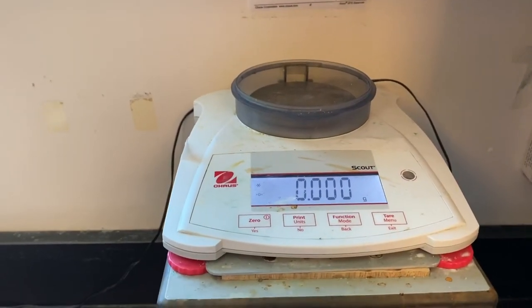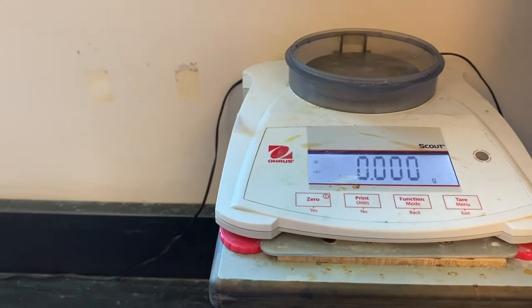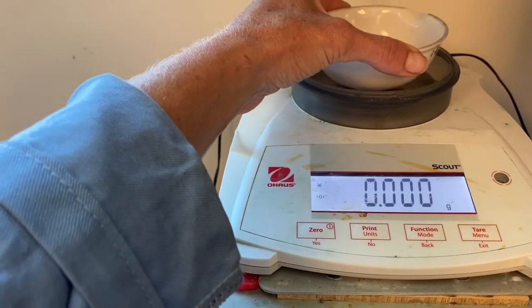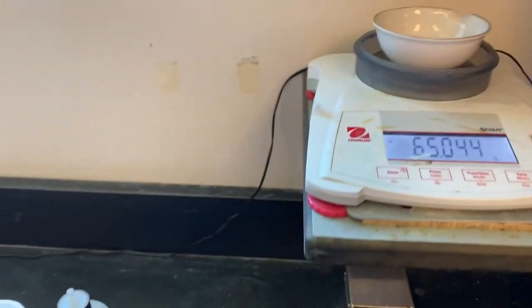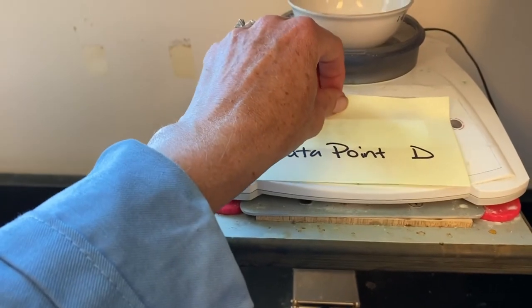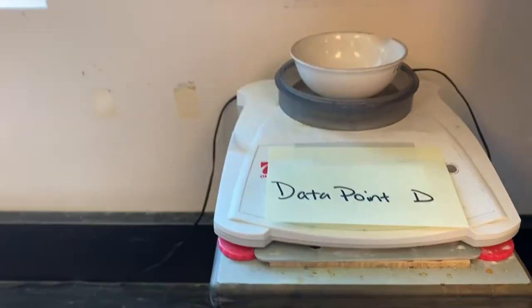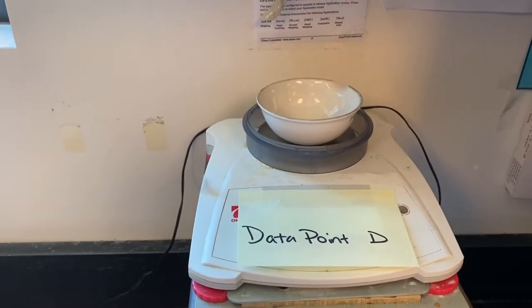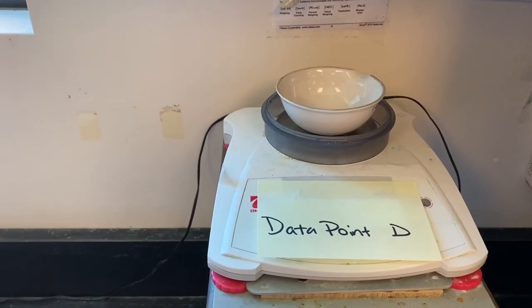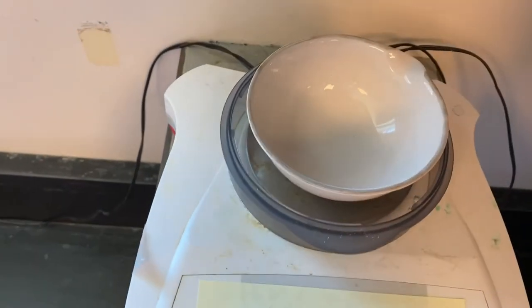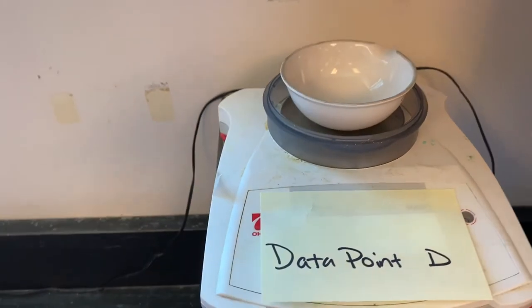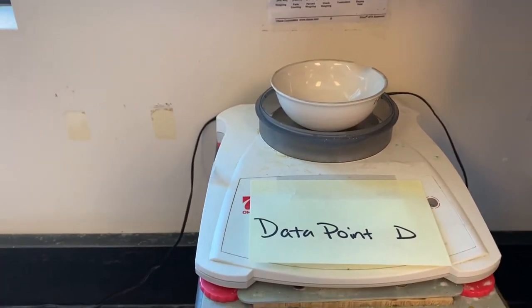Now I'm back at the scale. I have zeroed the scale. I have my clean, dry, evaporating dish and I'm placing this on the scale. So this is the mass of the clean and dry evaporating dish. This is data point D. And you can see inside it is empty and clean.